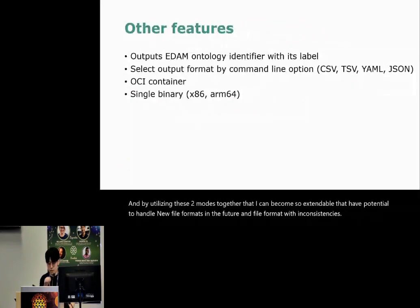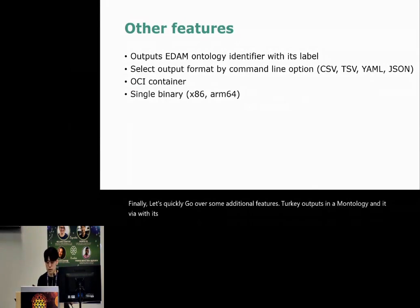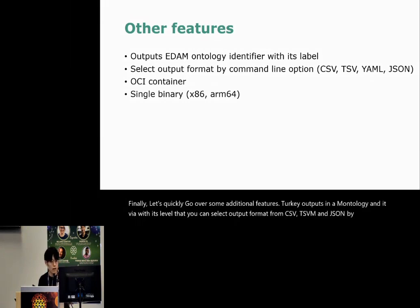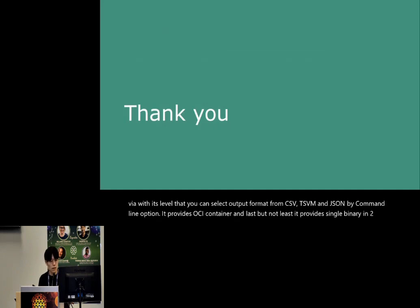Finally, let's quickly go over some additional features. Tazaki outputs a ontology identifier with its label, and you can select the output format from CSV, TSV, YAML, or JSON by command line option. It provides an OCI container, and last but not least, it provides a single binary in two formats. Thank you.